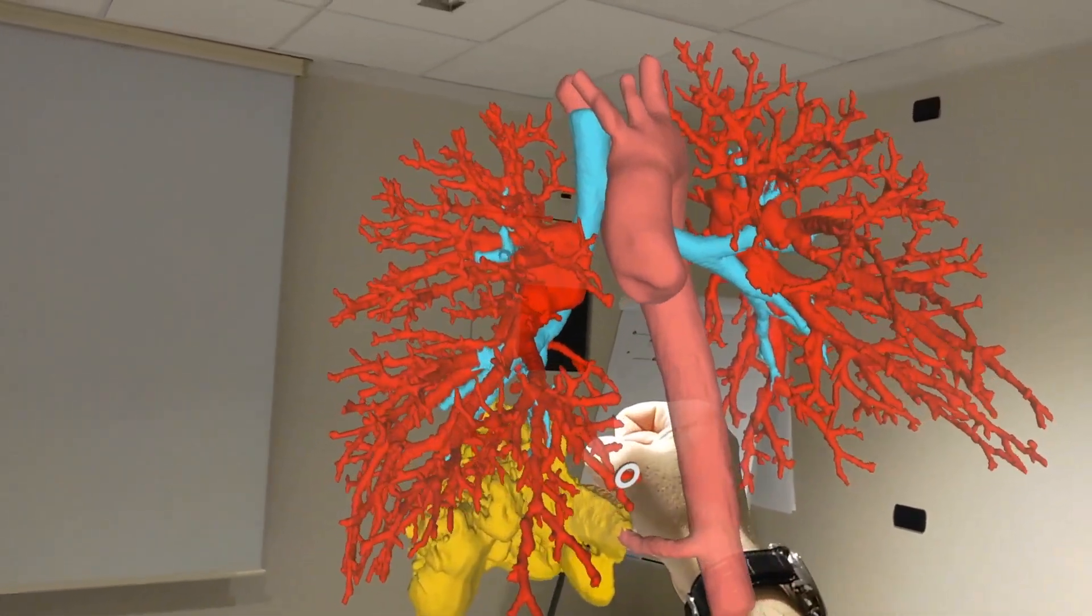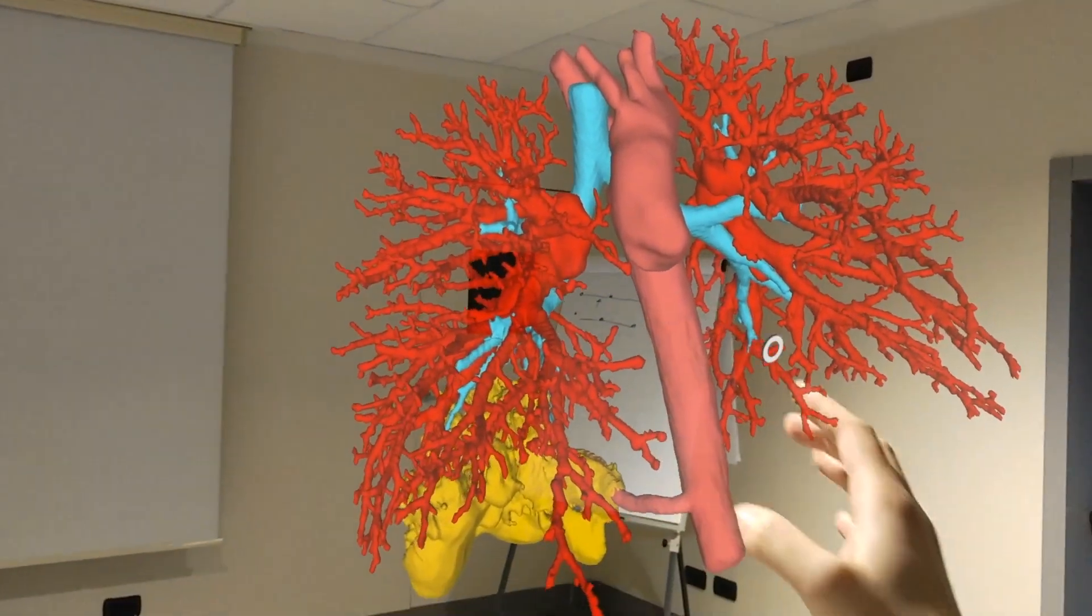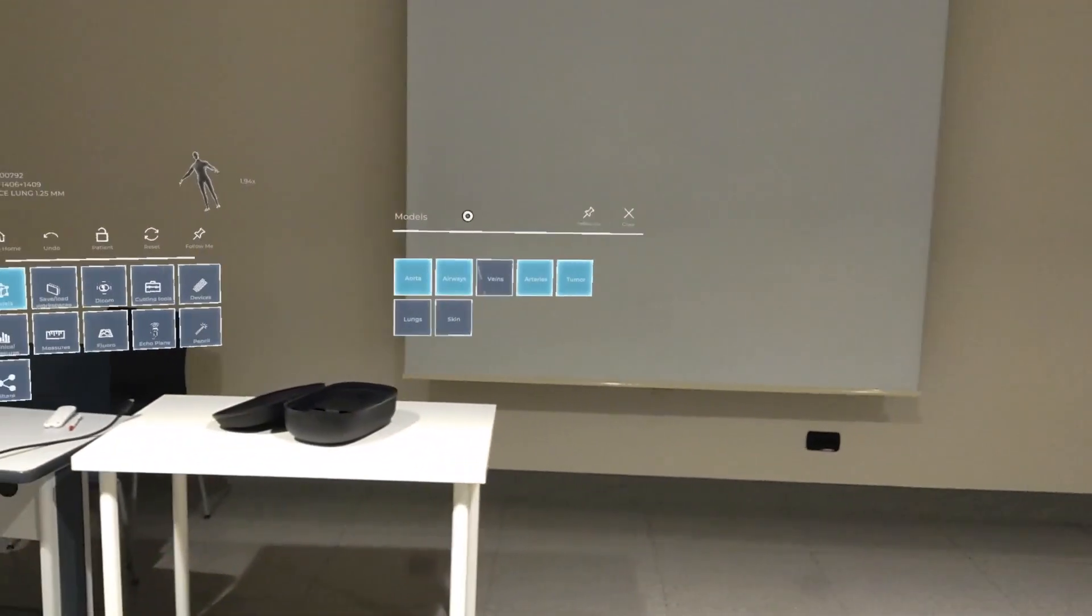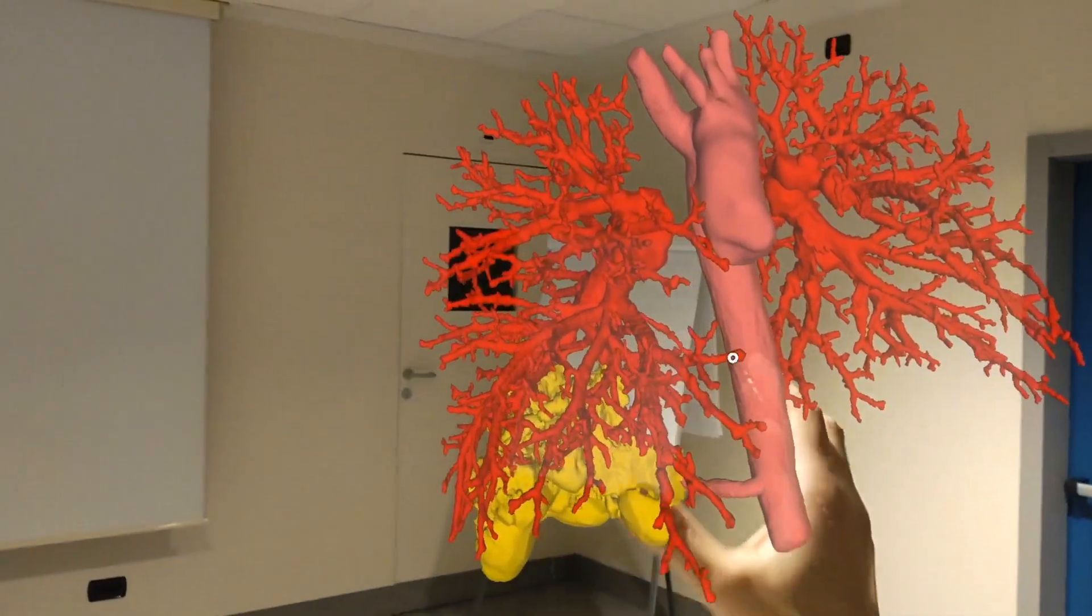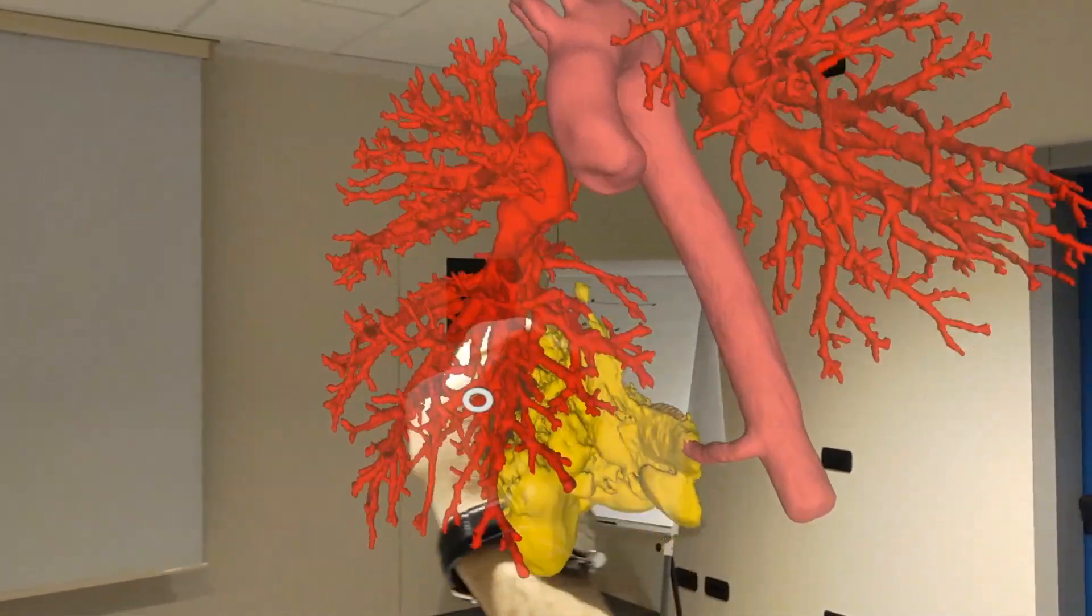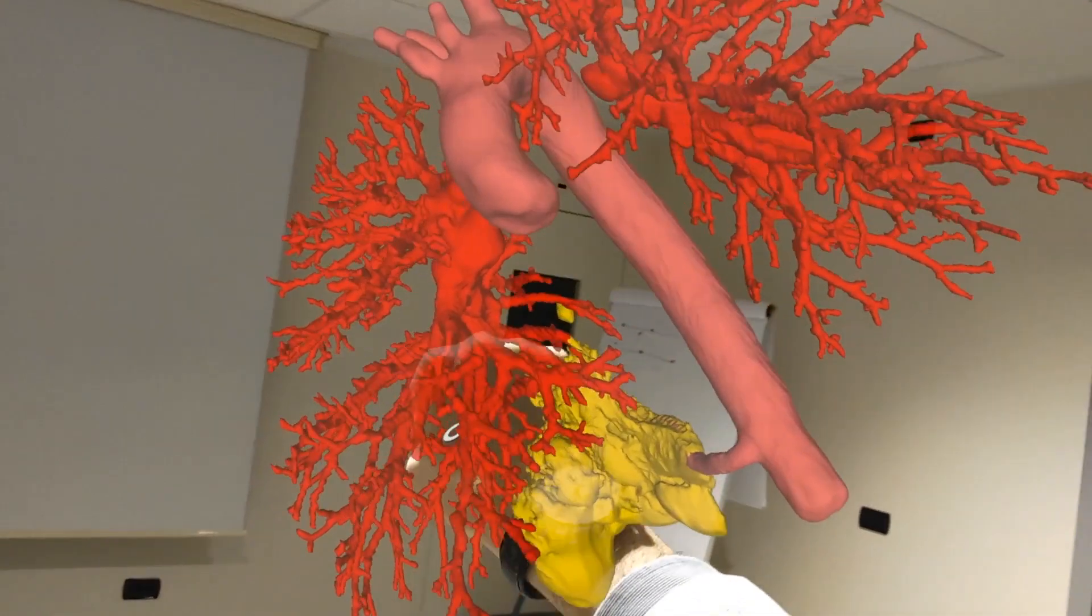Thanks to the holographic reconstruction based on preoperative standard CT scan, we were able to stretch and rotate the whole image to better visualize all vascular structures.